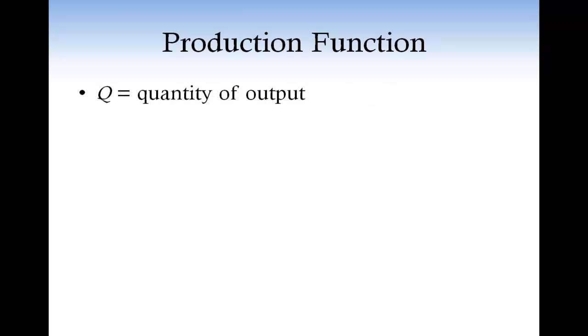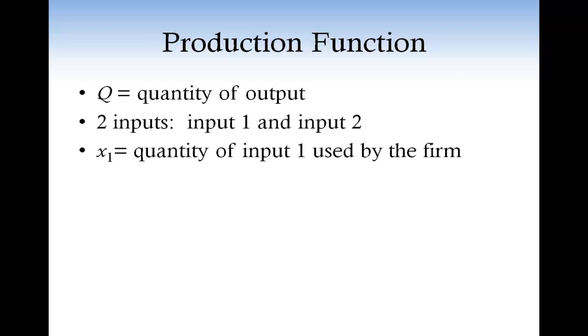Denote with Q the quantity of output produced by the firm. And to keep things easy, let's assume that the firm uses only two inputs. Call them input 1 and input 2. Denote with x1 the quantity of input 1 used by the firm, and with x2 the quantity of input 2 used by the firm.